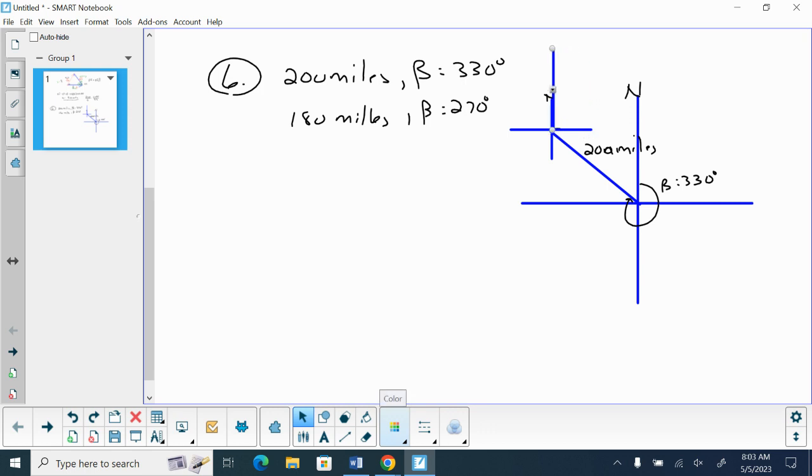So we are going to travel on a bearing of 270 degrees. So we need to rotate this. Let's see. 90, 180, and then 270. And we're traveling 180 miles with this. And we want to find the magnitude and direction if I would go these two vectors, what is my result?